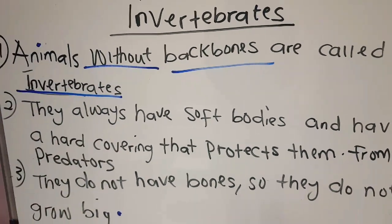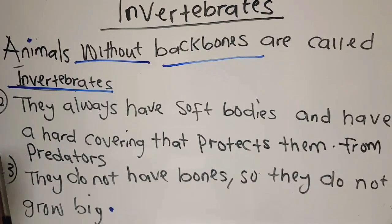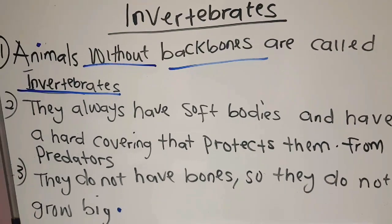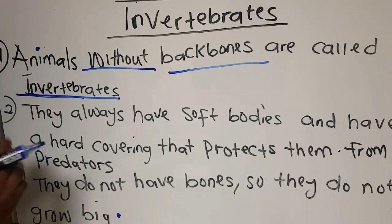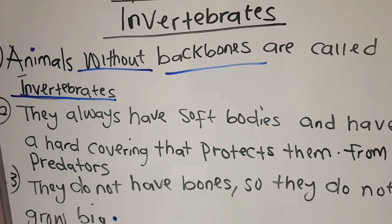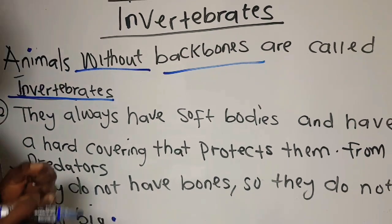They are called what? Invertebrates. So, animals that do not have bones are called invertebrates. Number two, they always have soft bodies.